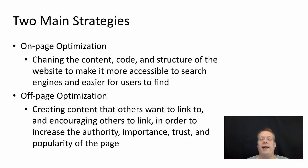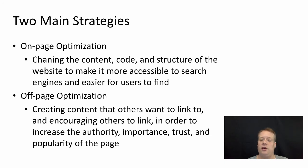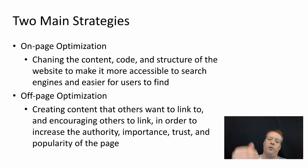So there are two main strategies to increase your search engine results relative to these influences. The first is on-page optimization — you can basically change the content, the code, the structure of your website to make it more accessible to search engines so they can easily find all the content, and also to make it easier for your users to find. And then there's off-page optimization, which means creating content on your website and encouraging others to link to your website in order to increase the authority, importance, trust, and popularity of your page.